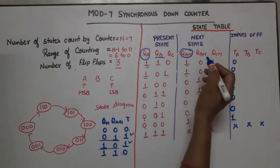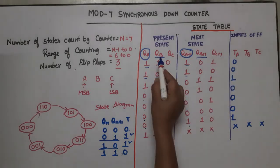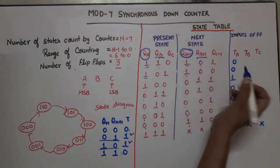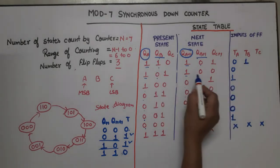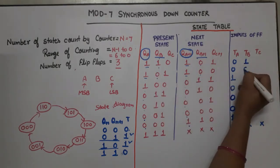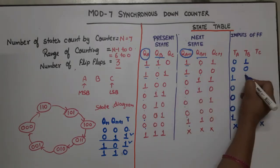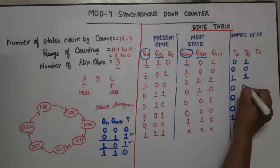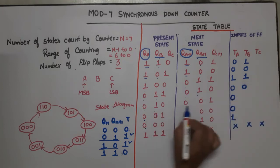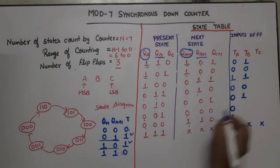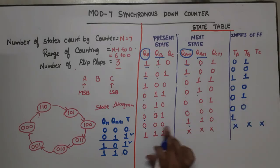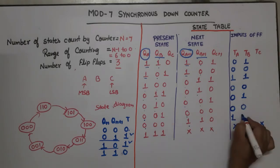For TB, comparing QB and QB+1: 1→0 change gives 1; 0→0 no change gives 0; 0→1 change gives 1; 1→1 no change gives 0; 1→0 change gives 1; 0→0 no change gives 0; 0→1 change gives 1.